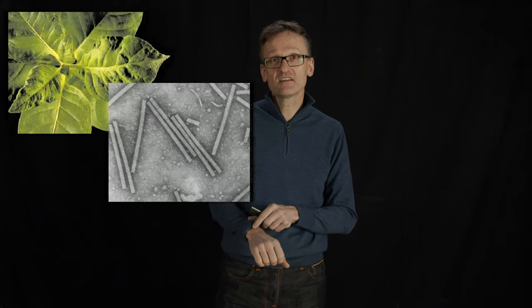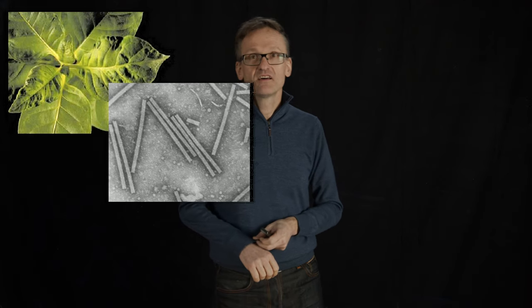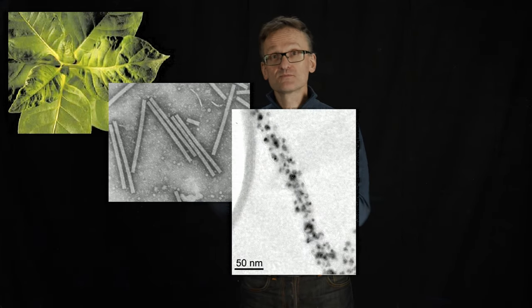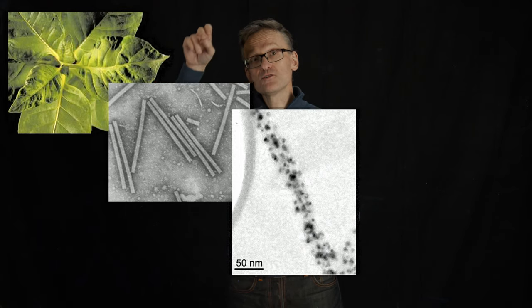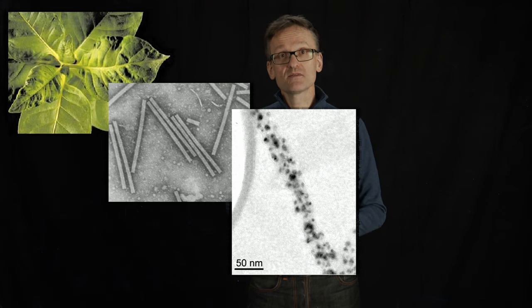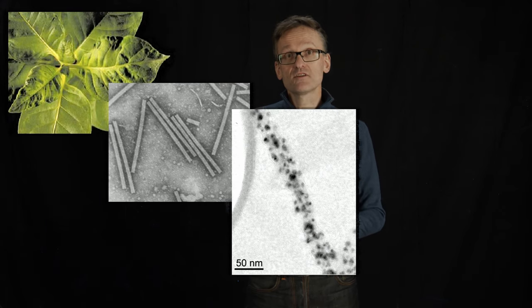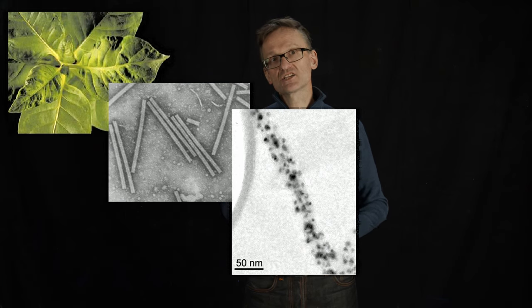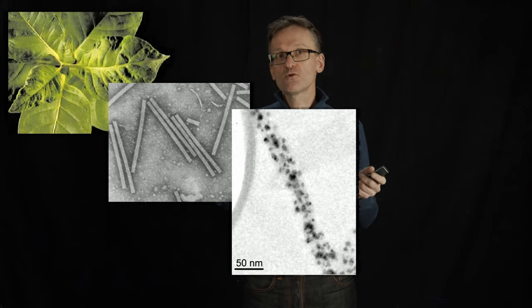Some 20 years later, a researcher was able to take the tobacco mosaic virus, not just crystallize it but actually determine its structure. If we're going from the TMV here, you saw a microscope image of it. This is a modern electron microscope image of it—you see the length scale there, 50 nanometers. You see that there's some sort of long rod-like shape, but we don't know what the rod is yet.